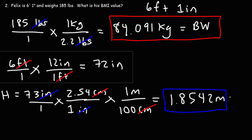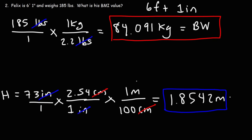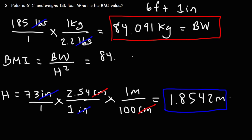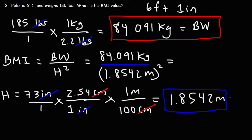Now that we have both Felix's body weight in kilograms and his height in meters, we can calculate his BMI. It's going to be 84.091 kilograms divided by the height 1.8542 meters squared. Don't forget to square it. This gives approximately 24.46 — that's his BMI.